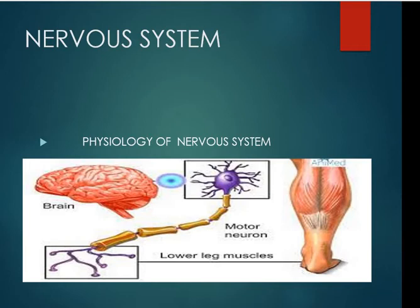In the last lecture, we started the chapter of the nervous system. We covered the central nervous system and peripheral nervous system as two parts. We further divided the central nervous system into the brain and spinal cord, and we also saw further divisions in the peripheral nervous system.